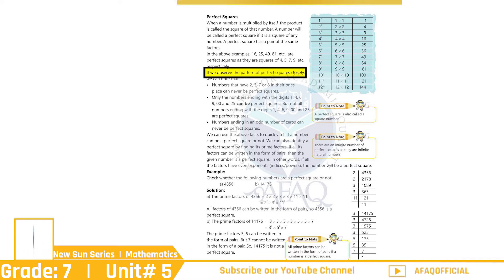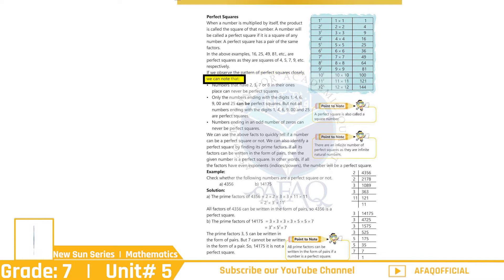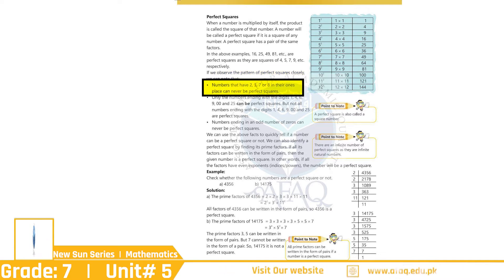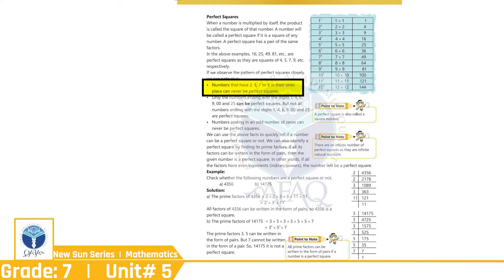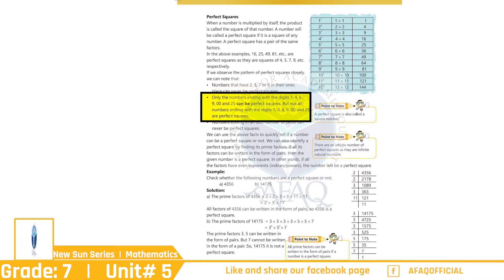بچو اگر ہم Perfect Square کو observe کریں تو ہمیں اہم باتوں کا پتہ چلتا ہے۔ نمبر ایک: وہ نمبر جن کے ones place میں 2، 3، 7 یا 8 ہو گا، یہ نمبر کبھی بھی Perfect Squares نہیں ہو سکتے۔